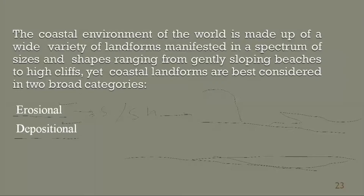There are two types of coastal landforms: one of them is erosional and the other is depositional. Both of them vary in terms of morphology as well as in terms of the sedimentary rocks that are present there and the amount of fluids present.